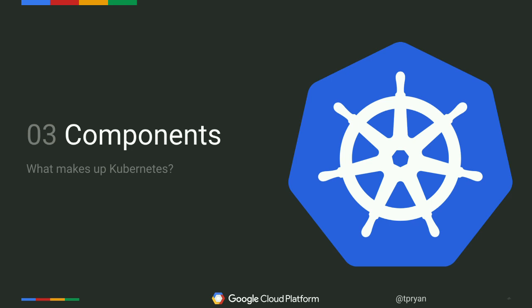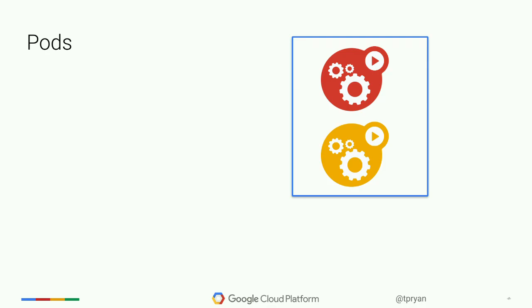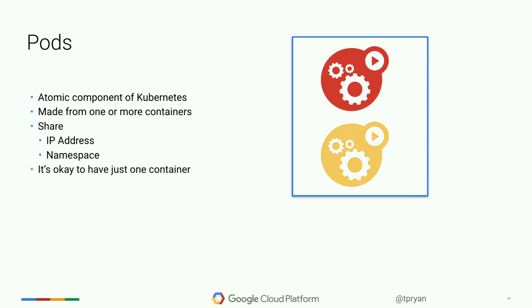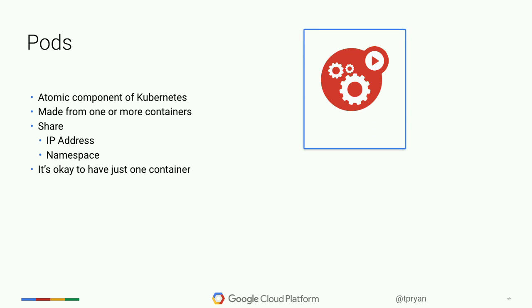Now I'm going to go through the pieces that make Kubernetes work, so when I demo it later it'll make sense. First: pods. Everything in Kubernetes runs inside a pod. Pods are the atomic component of Kubernetes — everything you do involves pods, not individual containers. They are made from one or more containers. The containers share namespace and IP address, so they each see each other as localhost.